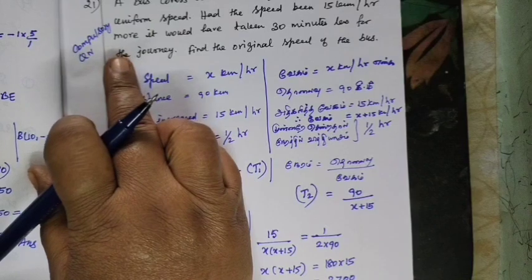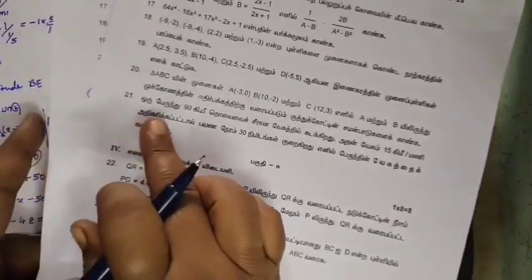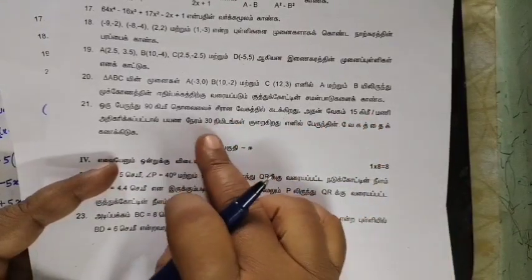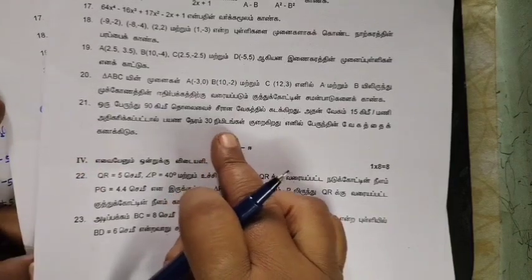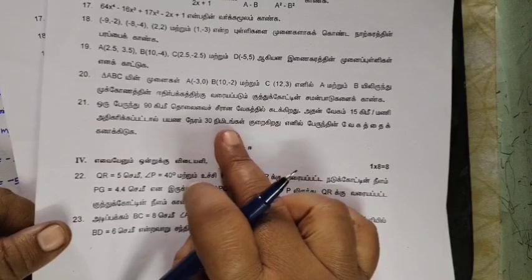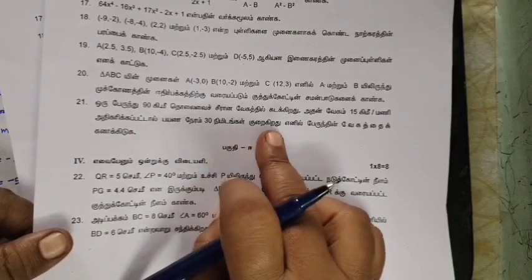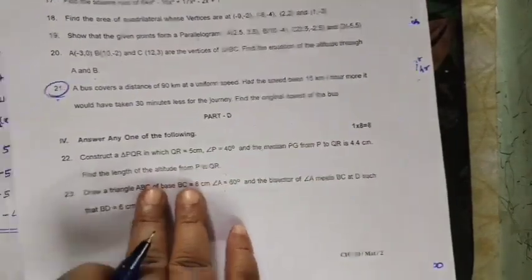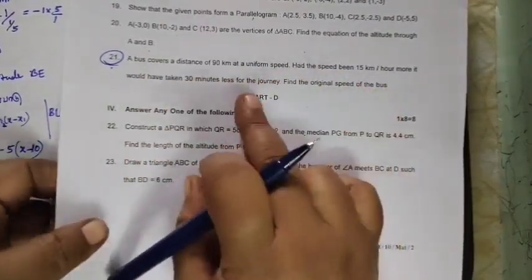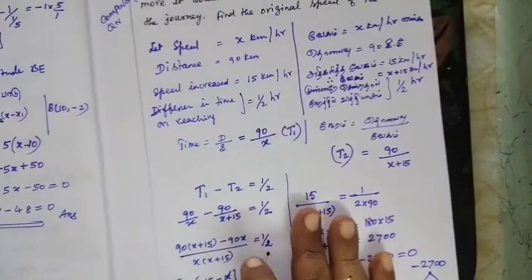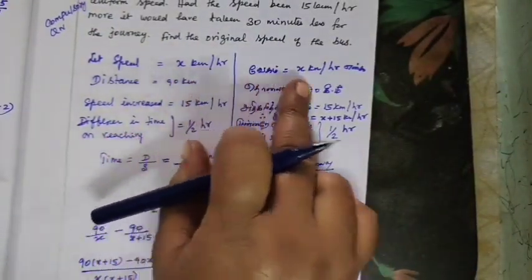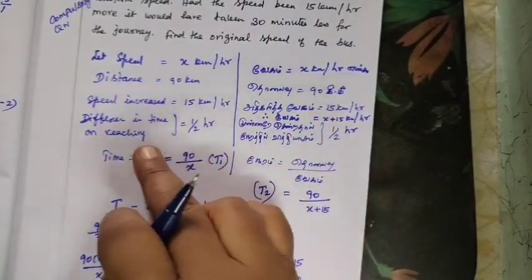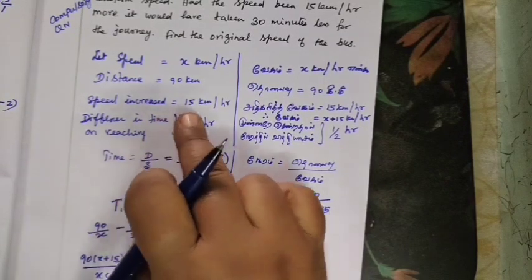Question number 21. This is the last question. The bus covers a distance of 90 km. There is a 30-minute difference. So the speed is x km per hour. The distance is fixed. Then the speed increases. That is the distance. Now the new speed is x plus 15.